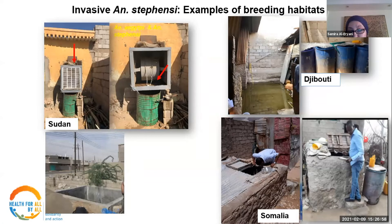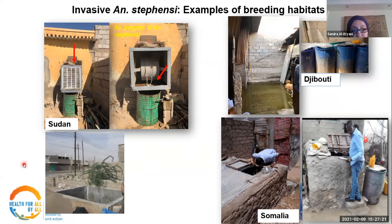Photos show the types of larval habitats where Anopheles stephensi has been found. In Sudan, it was found breeding in old air conditioning units alongside Aedes aegypti, as well as in septic tanks and cement tanks. In Djibouti, breeding occurred in water storage containers, barrels, and flooded rooms inside occupied houses — where both Aedes aegypti and Anopheles stephensi were co-found. In Somalia, it was found in brick or mud water storage containers called burkits.